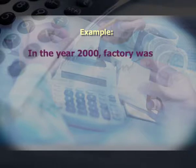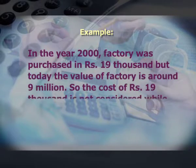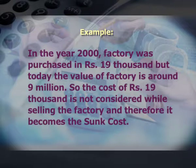Fifth is sunk cost. Sunk cost is the dead cost — it is historical or past cost incurred in the past. It was relevant at the time a particular decision was taken, but in the present it is not relevant while taking decisions today. It is included in relevant cost in decision making only because whatever decision is taken today should be right after analyzing past decisions and experience. For example, in the year 2000 a factory was purchased for rupees 19,000, but today the value of the factory is around 9 million. So the cost of rupees 19,000 is not considered while selling the factory and therefore becomes sunk cost.